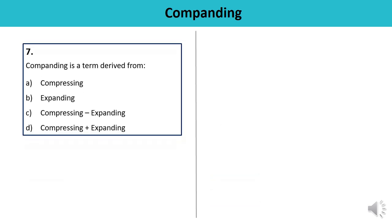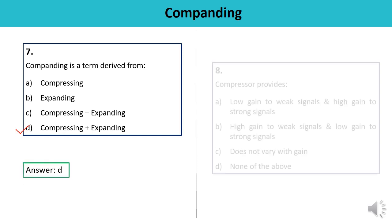Question number seven: Companding is a term derived from what? The term Companding is derived from two words — compression and expansion. Companding equals compressing plus expanding. The answer is D.